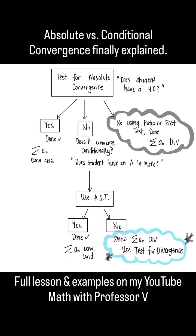If A-S-T fails, then you still need to show that the sum of A-N diverges using the test for divergence.